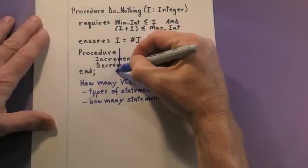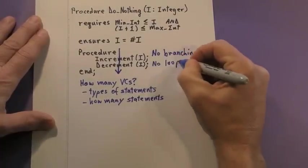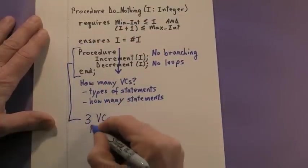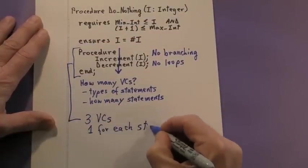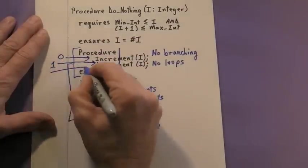For the do nothing operation, it is just straight line code. There is no branching, and there are no loops. Because of this, there will be three VCs for the do nothing operation. One for each state. One for state 0, one for state 1, and one for state 2.